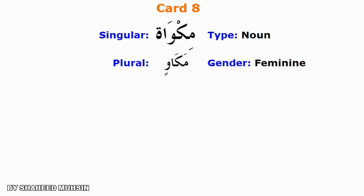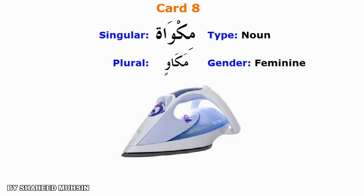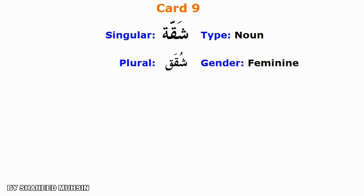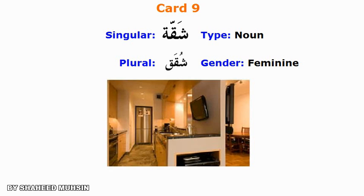Mekewat. Plural form: Mekawin — Iron. Shack'at. Plural form: Shuck'at — Flight.